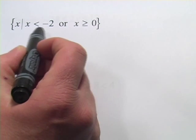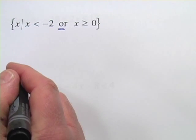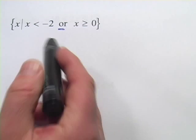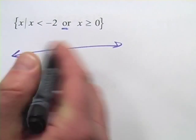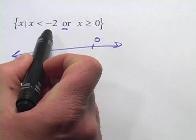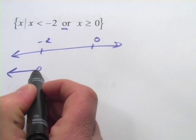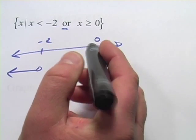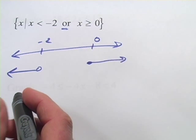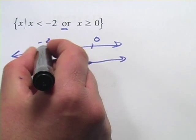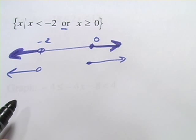Same kind of notation: x where x is less than negative 2 or x is greater than or equal to 0. An 'or' means we don't want the overlap — we want both branches because either one would satisfy the inequality. Our points of interest are negative 2 and 0. X is less than negative 2: empty circle, stretching off in the less-than direction. X is greater than or equal to 0: filled-in circle, stretching off that way. There's no overlap and that's okay because it's an 'or' problem, so we graph both branches going each direction.